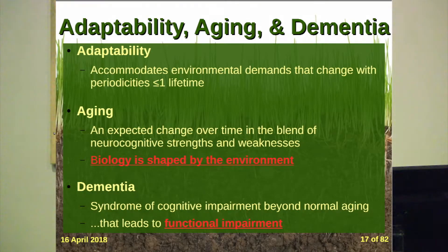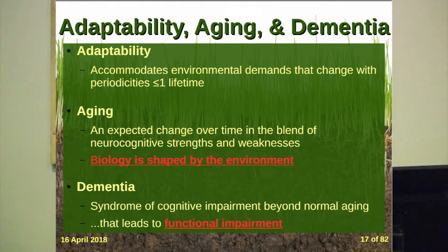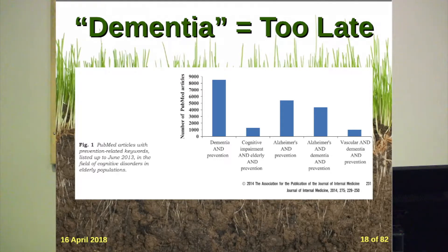To sum up: adaptability accommodates environmental demands that change with periodicities of less than a lifetime. Aging is an expected change over time in the blend of neurocognitive strengths and weaknesses, and this biology is shaped by the environment from day one. Dementia is a syndrome of impairment beyond normal aging that leads to functional impairment — a failure to meet the demands of the environment. We can prevent functional impairment by changing the environment or by changing the individual. But by the time we've diagnosed someone with dementia, the brain has changed too much. Hence all the interest in preventative treatments.